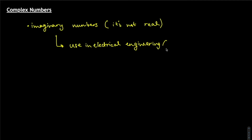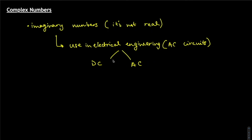It's used in AC circuits. Basically, circuits are of two types: DC (direct current), where current flows in one direction, and AC (alternating current), where current flows in both directions alternately, changing with different frequencies, lasting in one direction for a certain time then switching. This is the major application of complex numbers. You don't need to know this in detail right now — I just want to give you a feel for it so you don't think you're learning this just for the sake of a course.